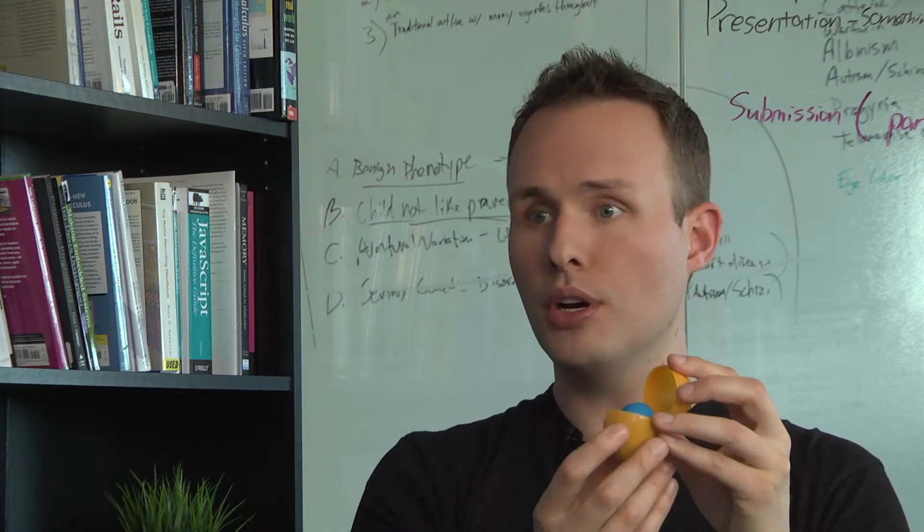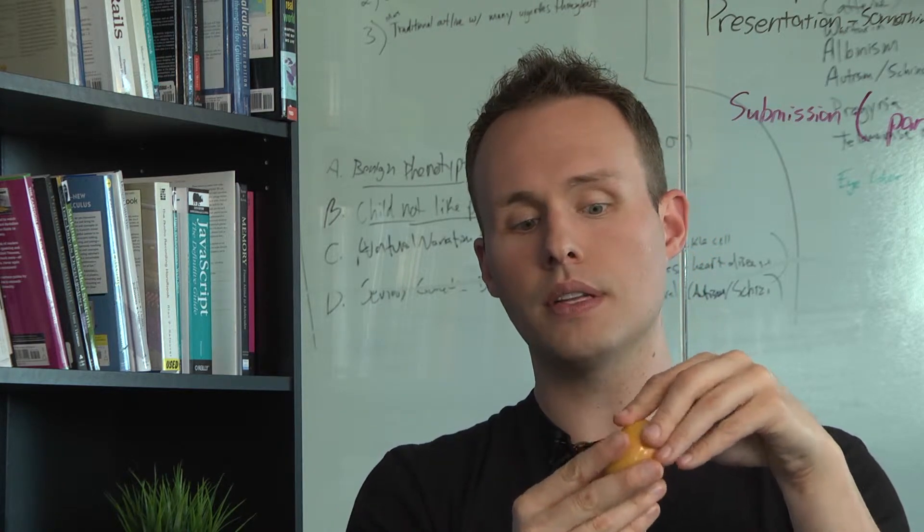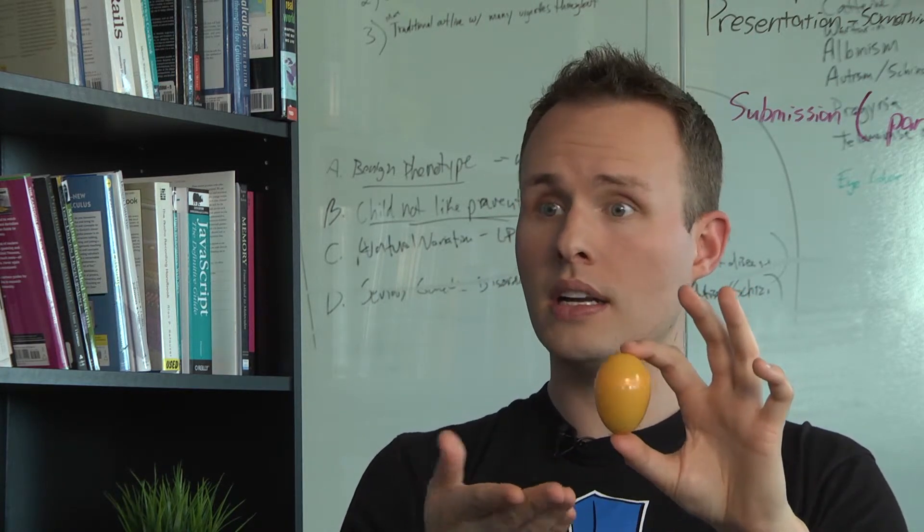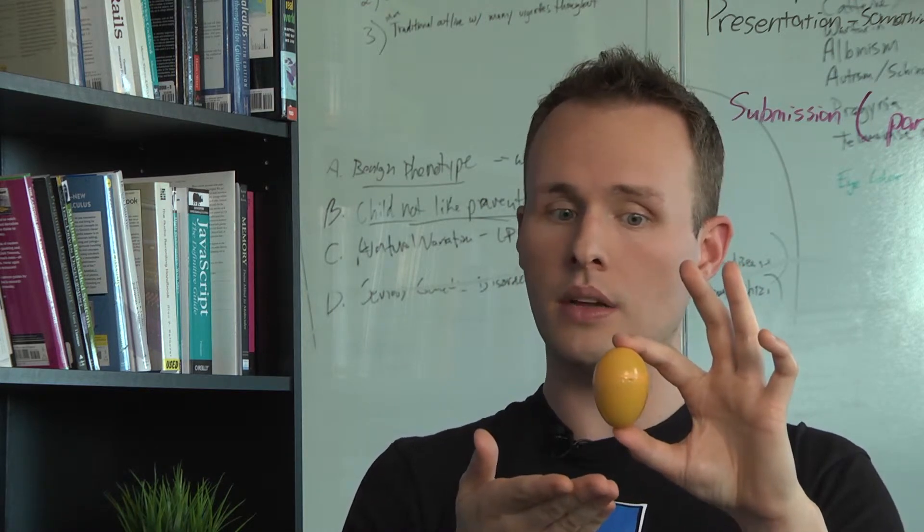We can show that here by putting the blue allele inside the brown allele, and the end product is we can only see the result of the dominant allele.